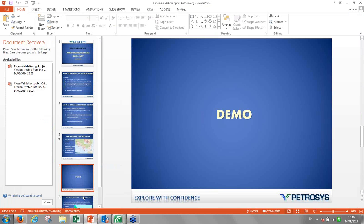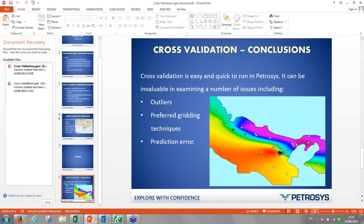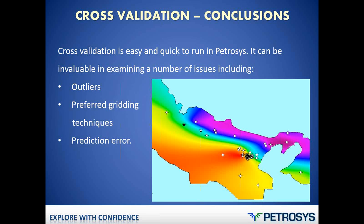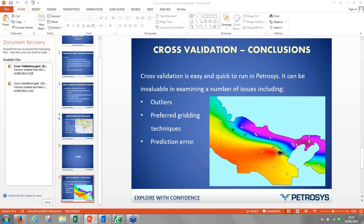Coming back to the presentation: I hope you agree that cross-validation is an easy and quick method to run in Petrosys, and it can be invaluable in examining a number of issues — including finding outliers such as erroneous wells or erroneous input data points, finding out which gridding algorithm gives the best prediction of the surface, and determining what error to expect when drilling a new well location based on the computed grid. Thank you very much for your attention. I will now unmute everyone — there is time for questions, so please let me know if you have any.